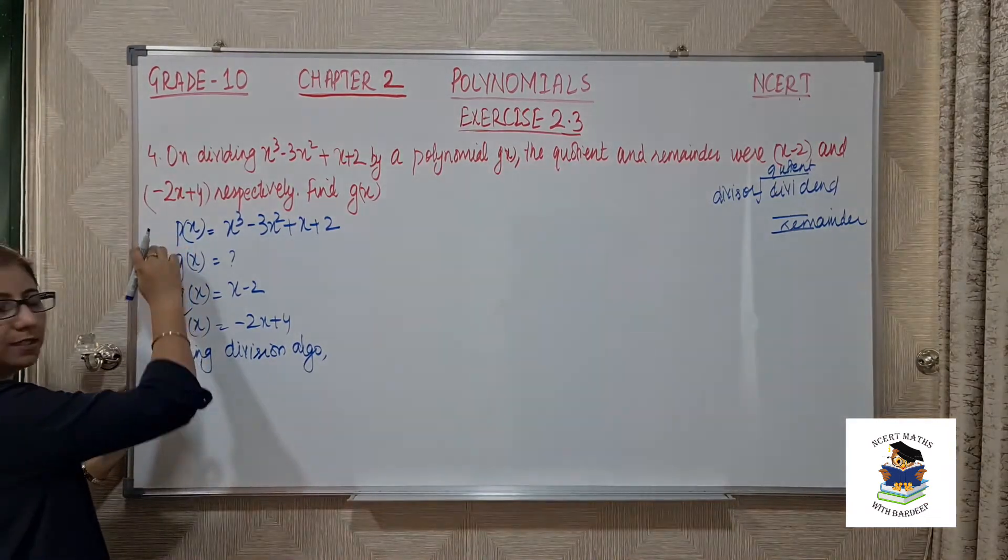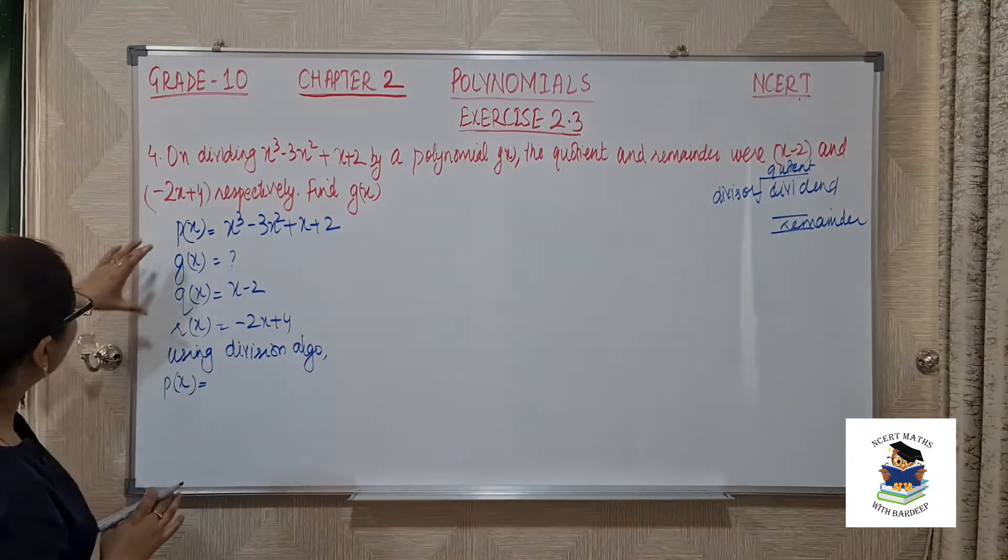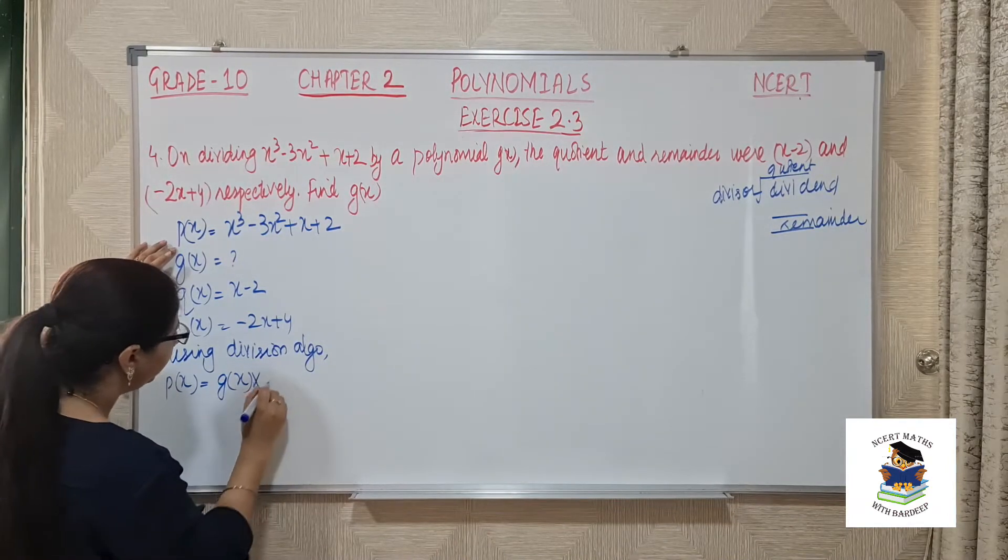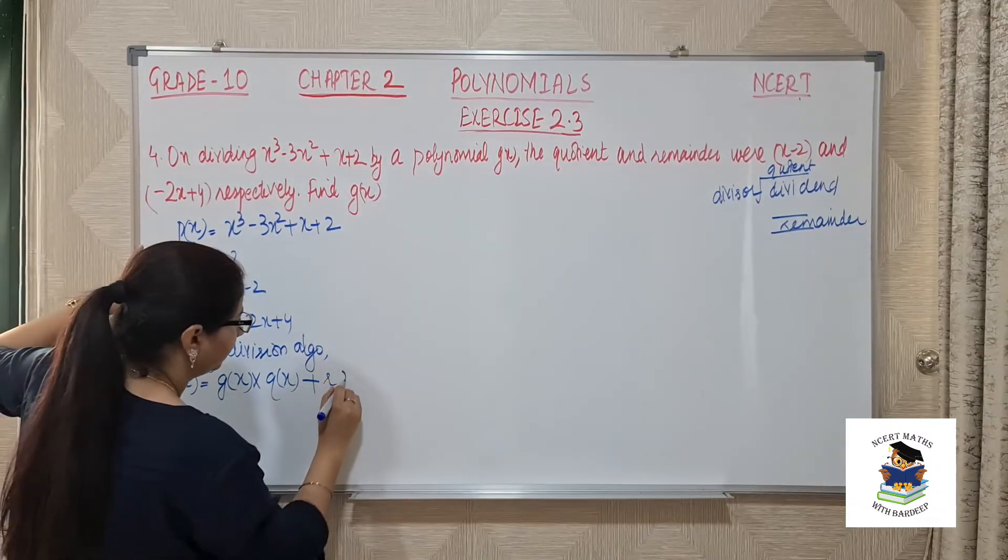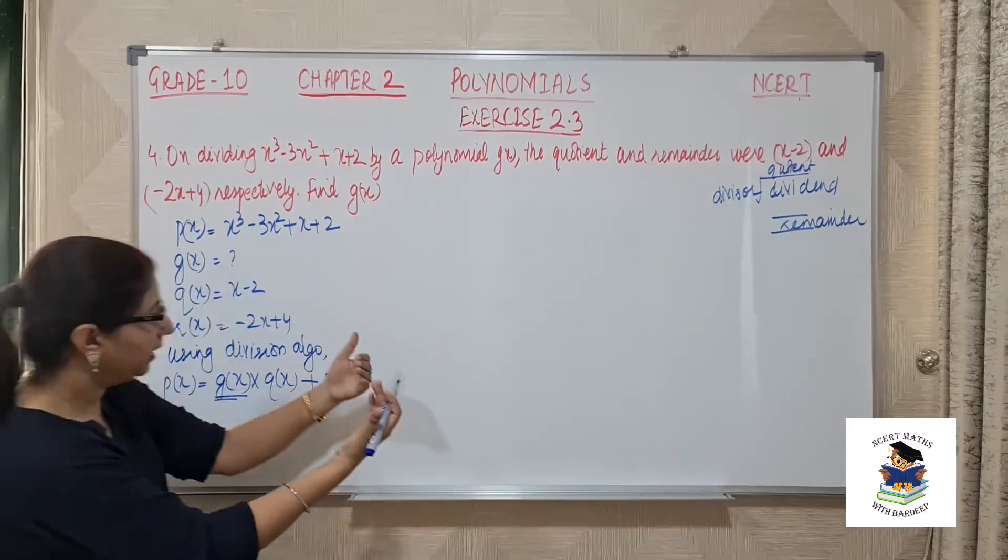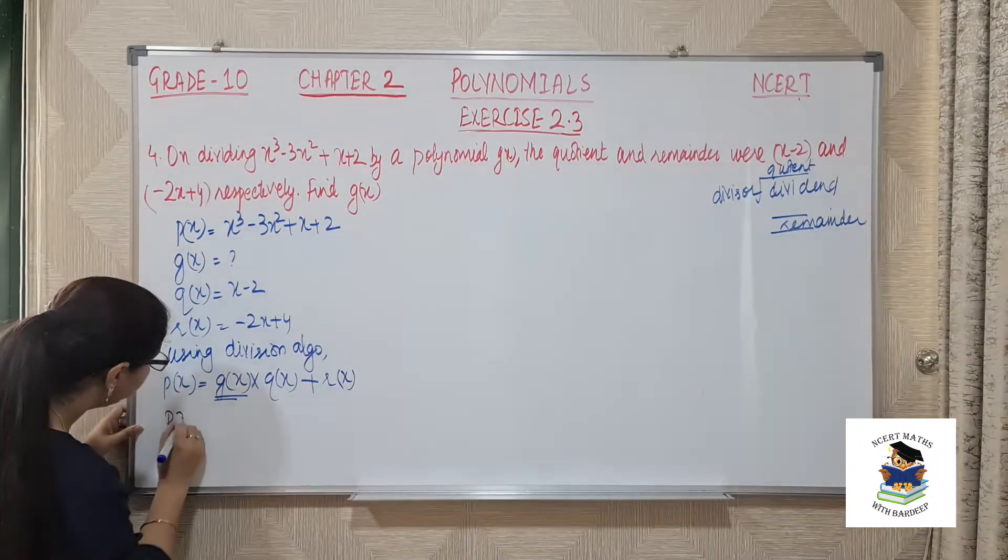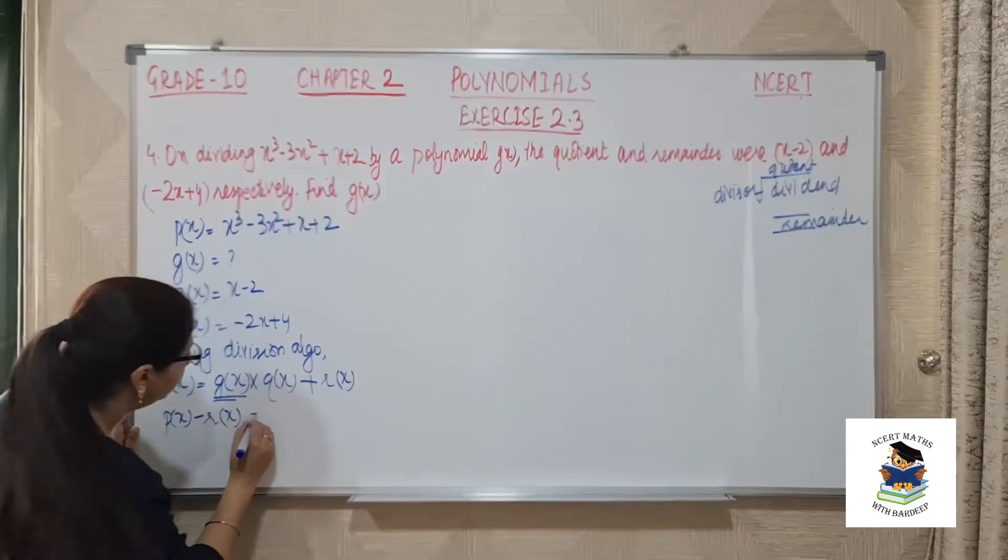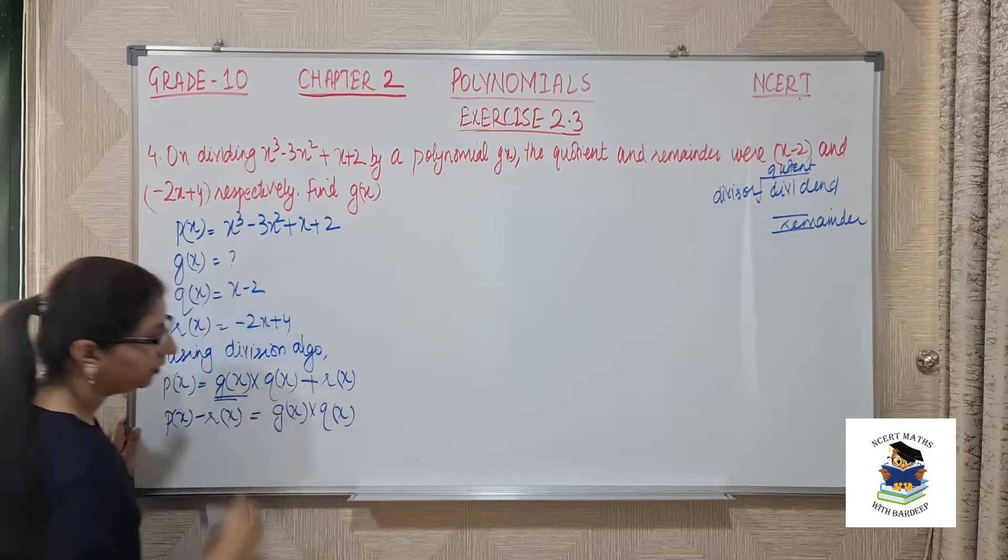We will write it here also. Using division algorithm, dividend px is always equal to the product of divisor with quotient, gx multiplied by quotient plus remainder. Now see, we need to find gx, that means we can shift this remainder to other side first. So px minus remainder is equal to gx into qx.